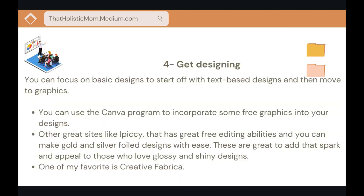Step four is to start designing. Focus on basic, text-based designs first, then move on to graphics. You can do so using the Canva program — free version or pro version for extra features. Canva incorporates graphics into your designs, makes them unique, and speeds up the process of creating, publishing, and uploading. Another great site is the free version of IPC, which has great free editing abilities and lets you make gold and silver foil designs with ease — super trending now on Redbubble and great for pre-teens and teenagers who love glossy and shiny designs.